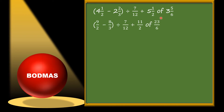So like this: 4 and 1/2 becomes (4×2+1)/2 = 9/2. Then 2 and 2/3 becomes (3×2+2)/3 = 8/3. Divided by 7/12. Plus 5 and 1/2 becomes (5×2+1)/2 = 11/2. And 3 and 5/6 becomes (3×6+5)/6 = 23/6. So these are the improper fractions.